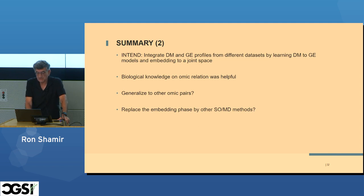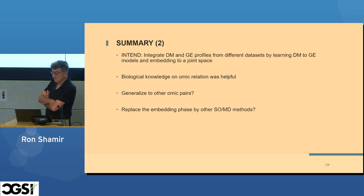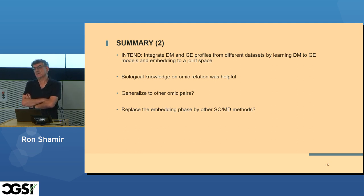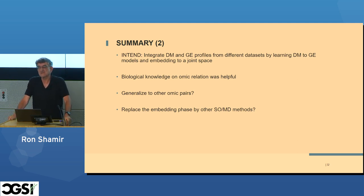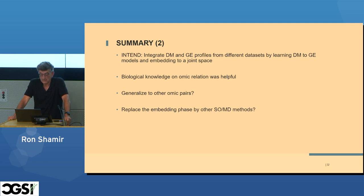To summarize, we developed a method to integrate methylation and expression profiles from different datasets using a combination of LASSO regression and embedding via canonical correlation analysis. The biological knowledge that methylation sites near the gene are relevant was critical — genome-wide approaches did not work. The embedding phase could be replaced by other methods, and the approach could be generalized to other omic pairs.